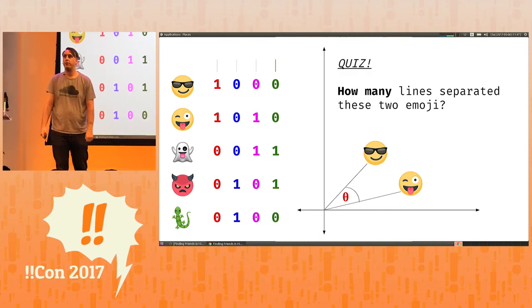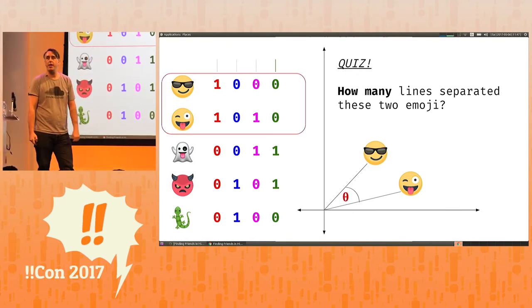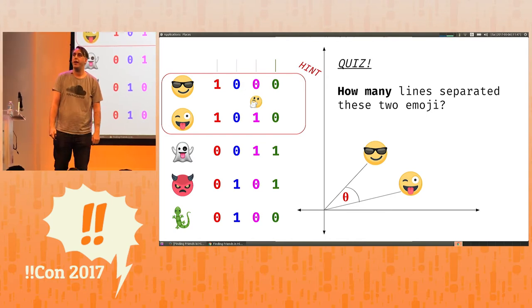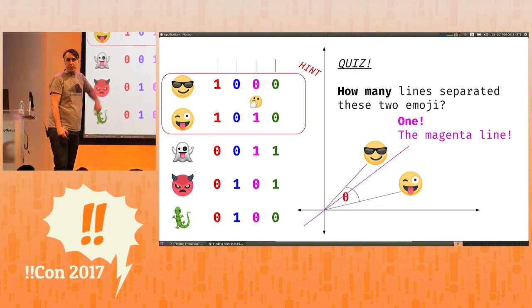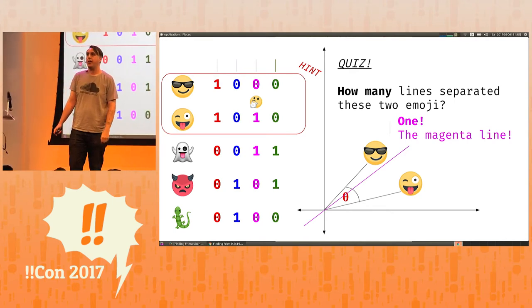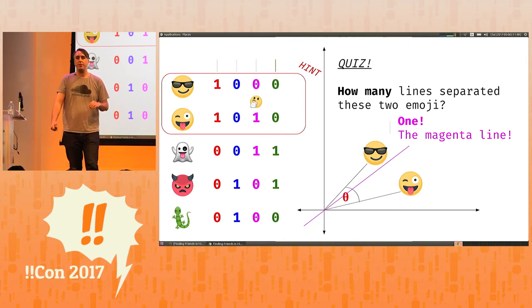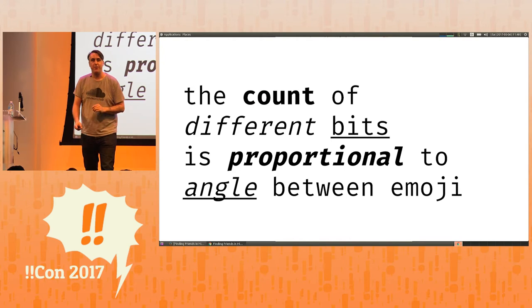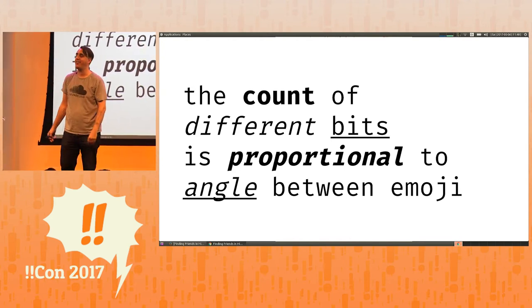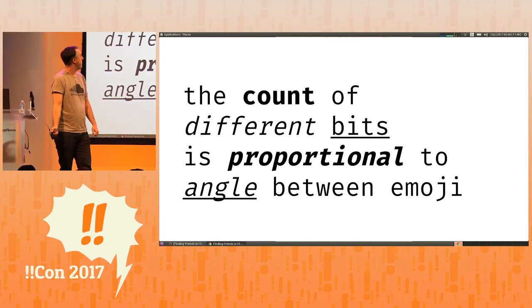Now, I'm going to give you all a quiz. And I'm not going to ask you for the answer because we don't have enough time. But how many lines separated these two emoji looking only at the bit strings? I'll give you a hint. The answer is one, and it is exactly the bits that are different between these two bit strings. So I now make the claim that if you count the number of bits that are different between two of these binary representations, that this is proportional to the angle between the emoji. And, of course, this is the case because the only time you separate a plane is when you pick a plane that separates them.